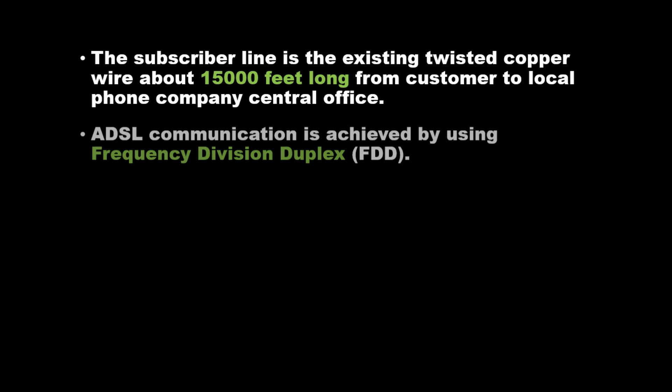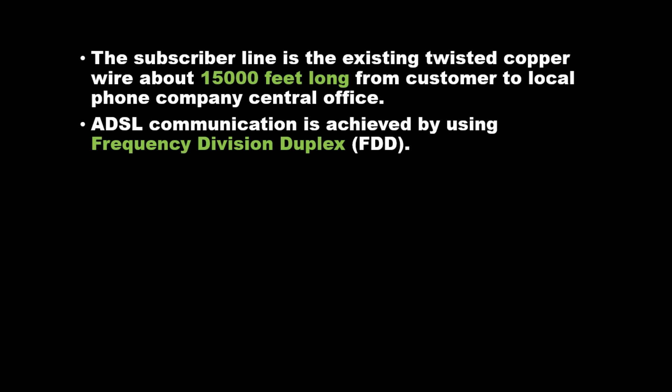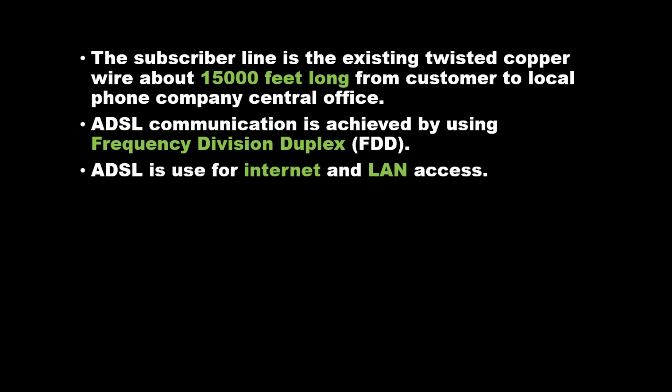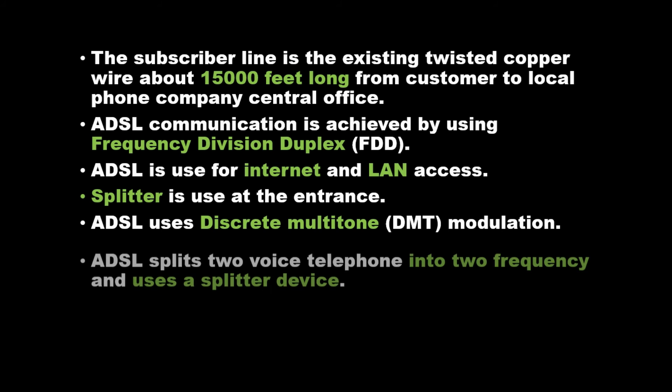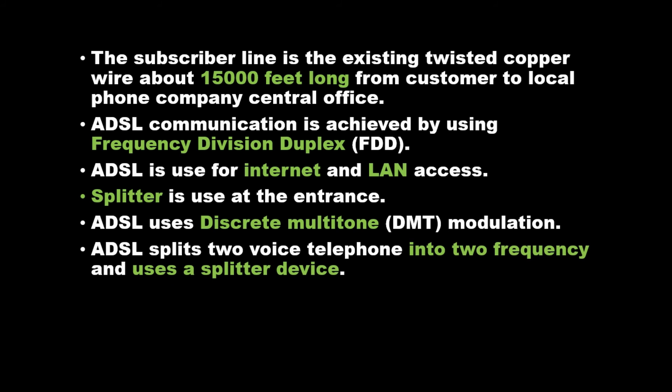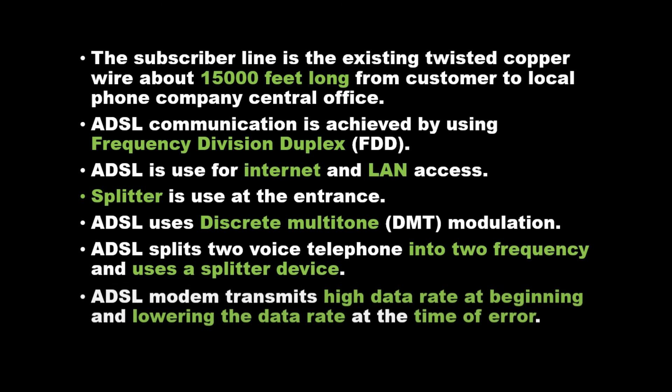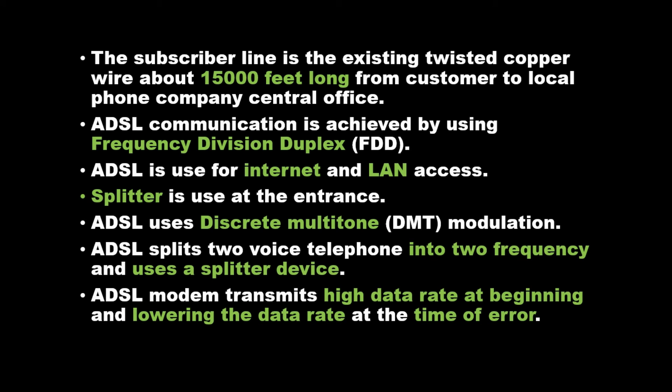ADSL communication is achieved by using frequency division duplex. ADSL is used for internet and LAN access. A splitter is used at the entrance, and ADSL uses discrete multi-tone modulation. ADSL splits the voice telephone line into two frequencies using a splitter device. The ADSL modem transmits at a high data rate initially, lowering the data rate when errors occur.